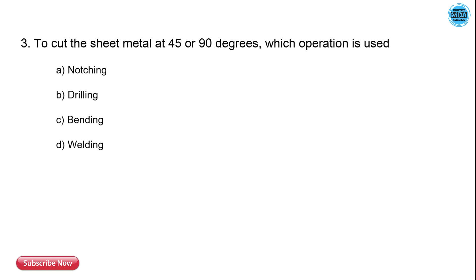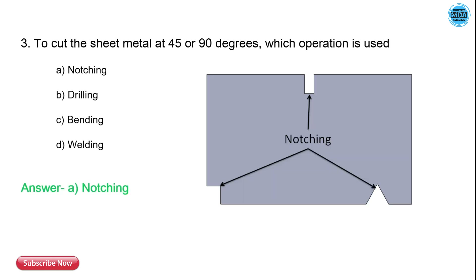The third question is: to cut the sheet metal at 45 degrees or 90 degrees, which operation do we use? The options are notching, drilling, bending, and welding. The correct answer is notching — we use notching to cut sheet metal at 45 degrees and 90 degrees.